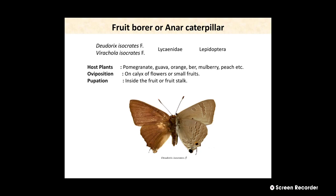The host plants of Fruit Borer are pomegranate, guava, orange, ber, mulberry, peach, etc. The next point is oviposition or site of egg laying. The female moth of the Fruit Borer lays their eggs on the calyx of flowers or also on small fruits. Pupation takes place inside the fruit or also in the fruit stalk.